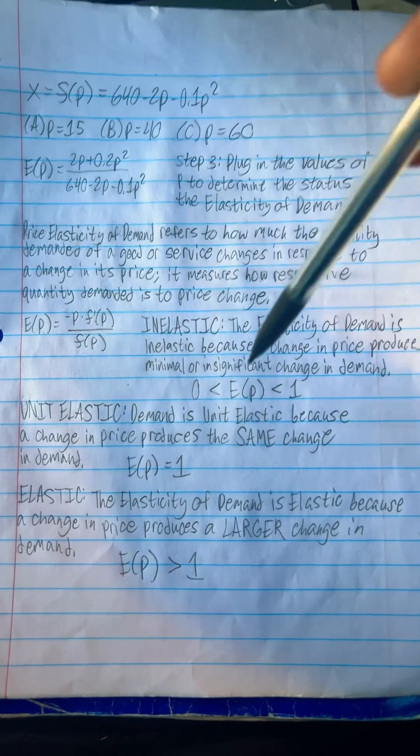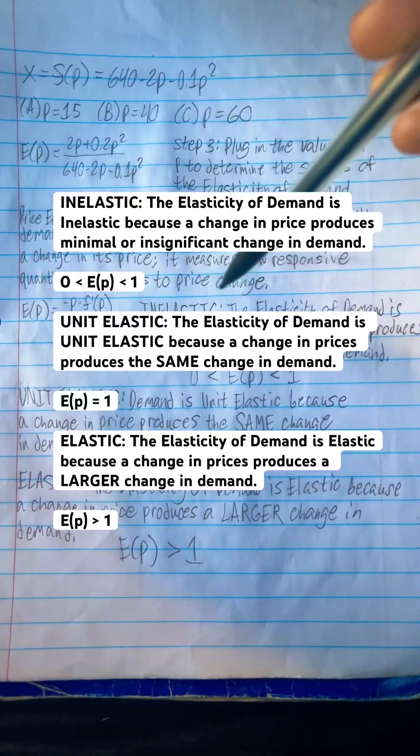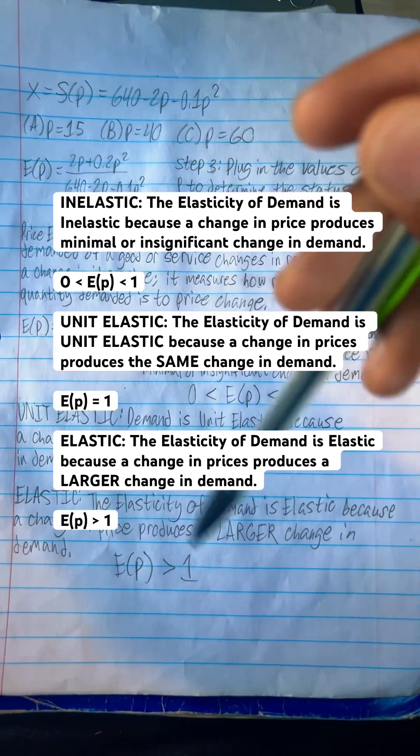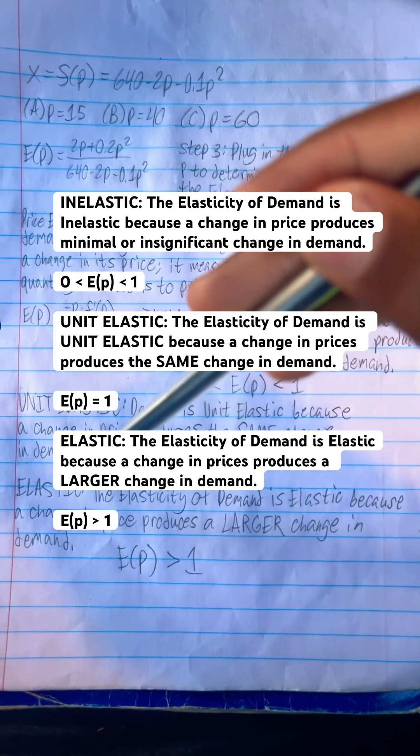If E of P is between 0 and 1, then it's inelastic. If E of P is equal to 1, it's unit elastic. If E of P is greater than 1, then it's elastic.